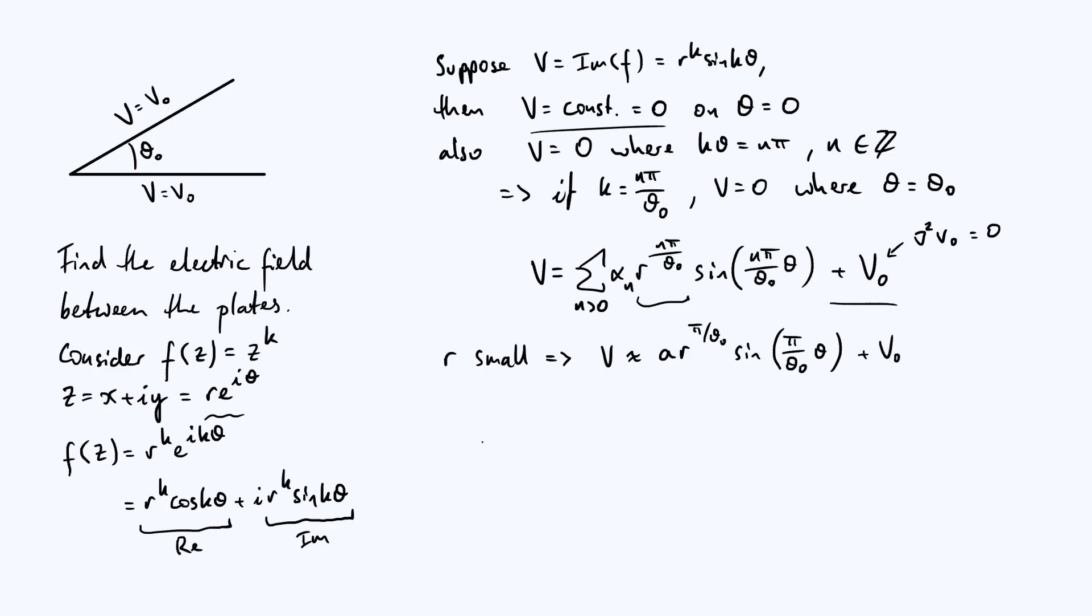And once we have our potential, it's straightforward to go from there to the electric field, because the electric field is just minus the gradient of the potential. Let's stick to polar coordinates. And so first, let's get the radial component of the electric field. That just involves differentiating V partially with respect to r. So you're going to get a·π/θ₀ from differentiating with respect to r. Then r^(π/θ₀ - 1), just decrease the power by 1, and your sine term is unchanged. So sine of π/θ₀·θ, that's in the r direction. Then I stick a minus sign in front because of the minus sign in the definition of how electric field is related to potential.